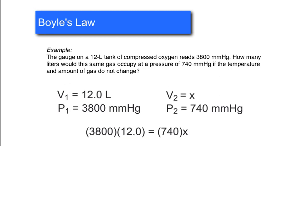And what we're trying to find is the liters at the end, so that's our V2, and we have a final pressure of 740 millimeters of mercury. So if we do P1 is 3,800 times V1, which is 12 liters, is equal to P2, which is 740, times V2, which is our X. Alright, if we solve for X in this case, if we multiply 3,800 times 120, we get 456,000. And then if we divide both sides by 740, that gives us a final volume of 616 liters.